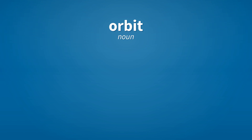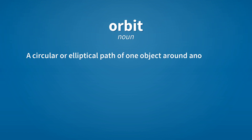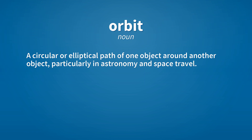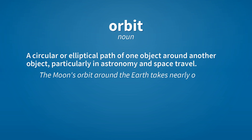Orbit. Noun. A circular or elliptical path of one object around another object, particularly in astronomy and space travel. The moon's orbit around the Earth takes nearly one month to complete.